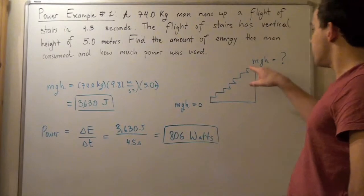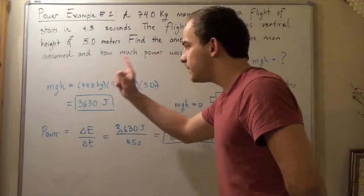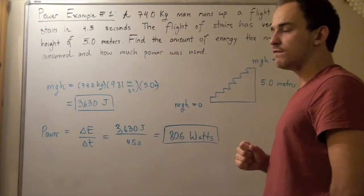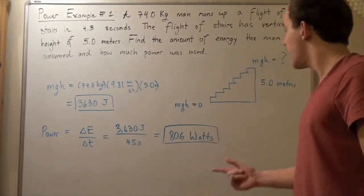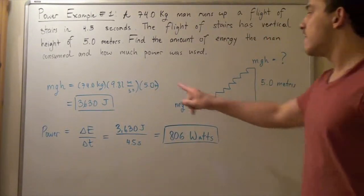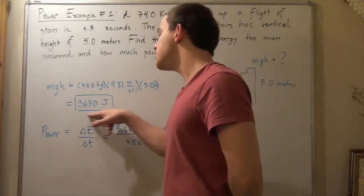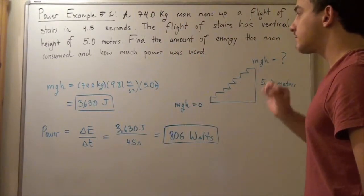Let's simply find our mgh. So, mgh is equal to 74 kilograms, the mass of the man, times our gravitational field, 9.81 meters per second squared, multiplied by our vertical distance, 5.0 meters. In other words, this is the amount of energy that was used up by our man.